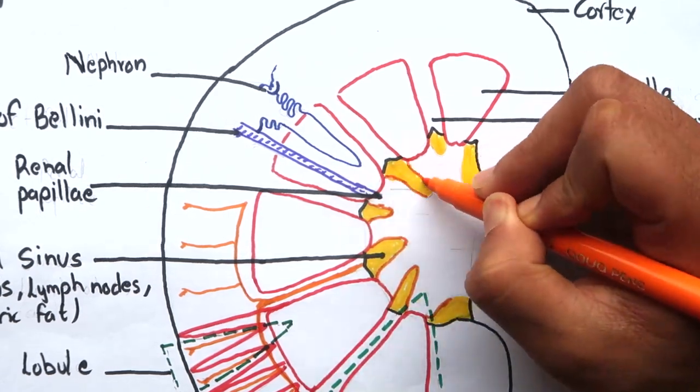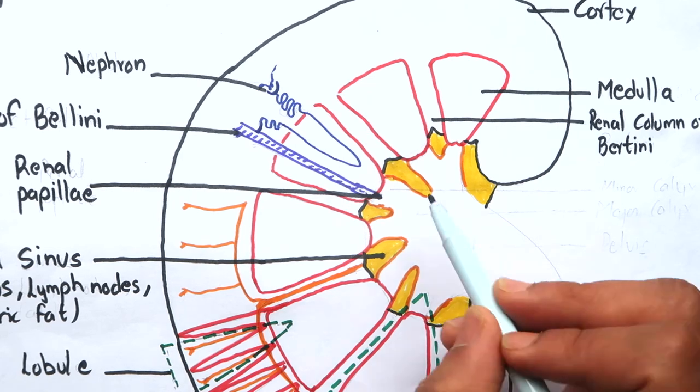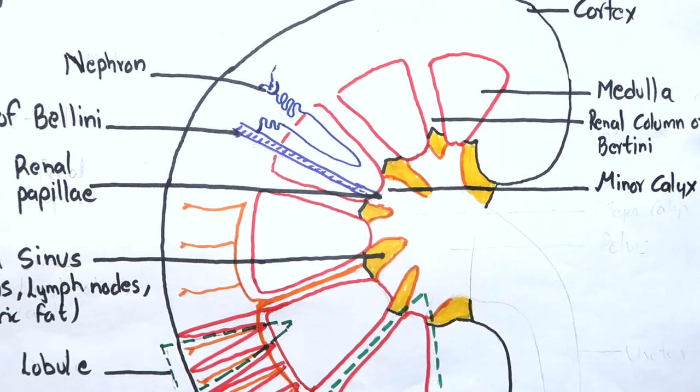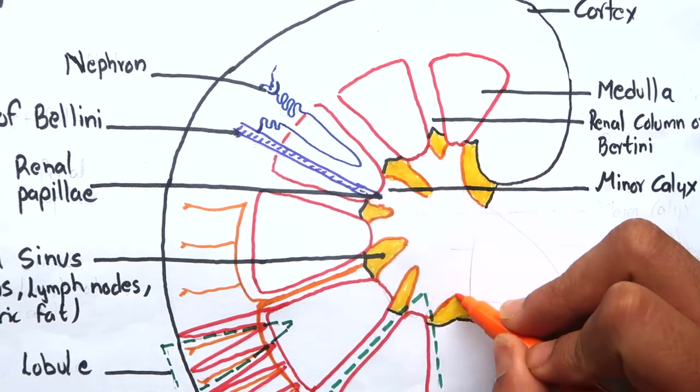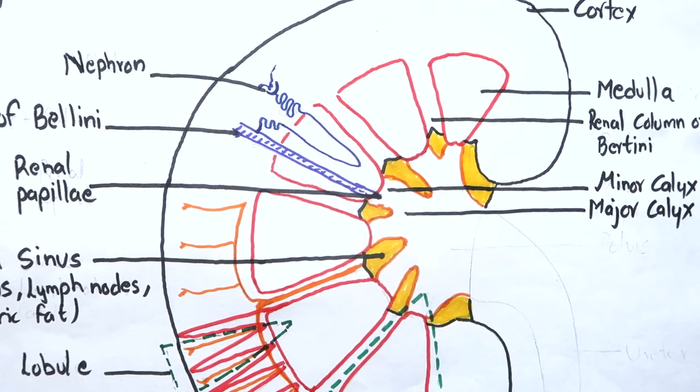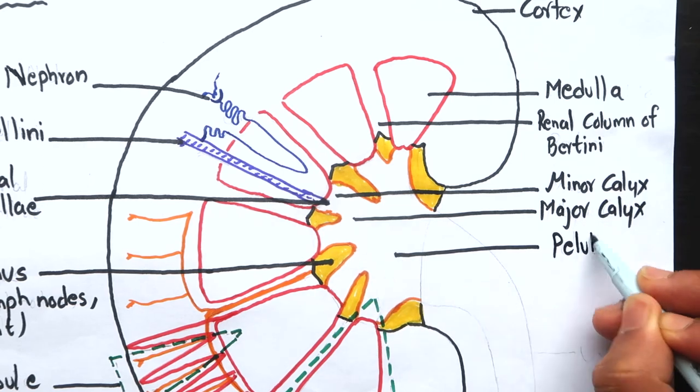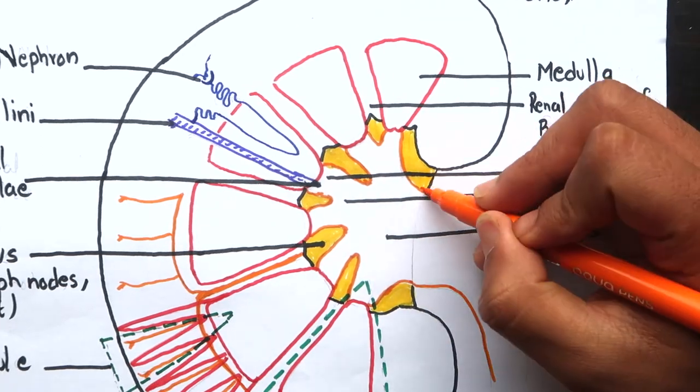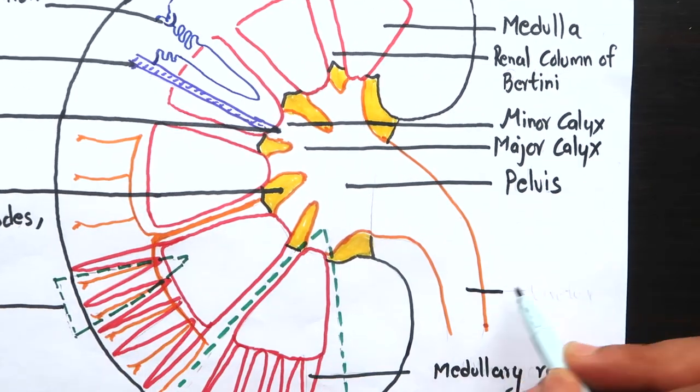The renal papilla first opens into minor calyx which joins with other minor calyces to form major calyx which again fuses with other major calyces to form renal pelvis. The renal pelvis comes out from the hilum and continues as ureter proper.